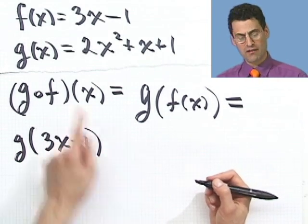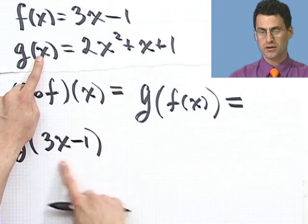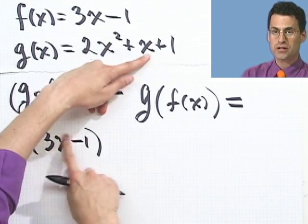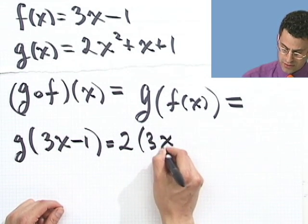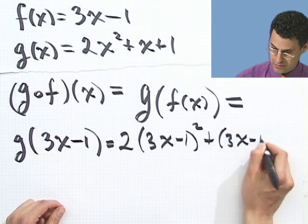And now what do I do? Now I go to the g function, and wherever I see an x, I'm going to replace it by all this gobbledygook. So I'm going to see 2 times gobbledygook squared plus gobbledygook plus 1. So that's 2 times the quantity gobbledygook squared plus gobbledygook plus 1.